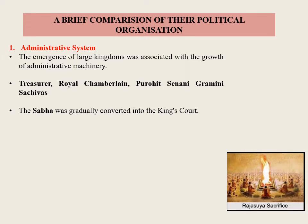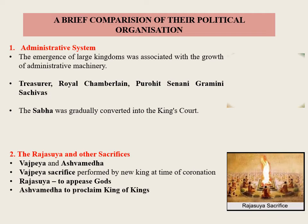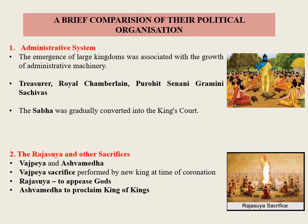The Rajasuya and other sacrifices such as Vajpayya and Ashwamedha were unknown in the Rig Vedic age. In the later Vedic age, the Vajpayya sacrifice was performed by a new king at the time of his coronation. The Rajasuya sacrifice was performed to appease gods and ensure the material well-being of the kingdom. The Ashwamedha sacrifice was an occasion for a powerful king to proclaim that he was a king of kings.